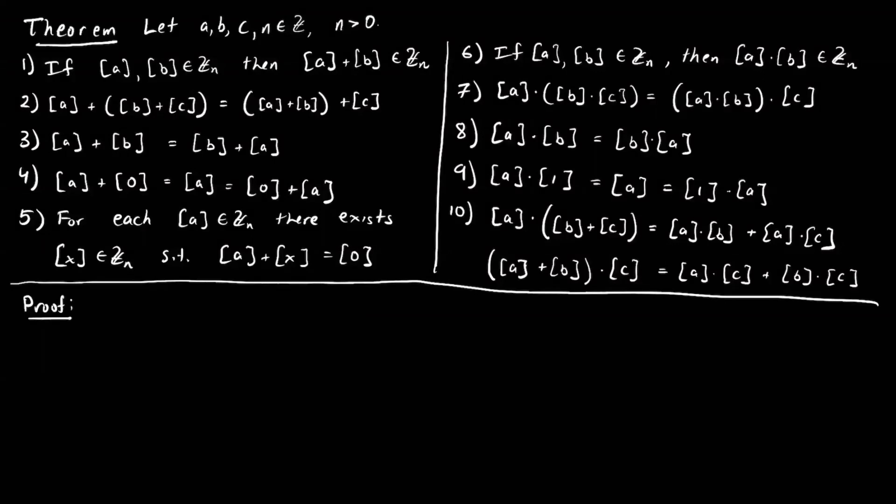Let's go through proofs of some of these properties. Properties one and six hold by definition — by how we've defined our operations, we guarantee that the sum of two equivalence classes is an equivalence class and that the product of two equivalence classes is an equivalence class. Let's prove property two.